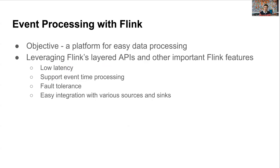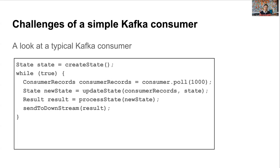Now that I've covered event producing, let's focus on what we've done to facilitate event consuming. One important objective for Iguazu is to create a platform for easy data processing. Apache Flink's layered API architecture fits perfectly with this objective. We chose Apache Flink also because of its low-latency processing, native support for processing based on event time, fault tolerance, and built-in integrations with a wide range of sources and sinks including Kafka, Redis, Elasticsearch, and S3. Ultimately, we need to understand what a stream processing framework can do for you, demonstrated by looking at a simple Kafka consumer.